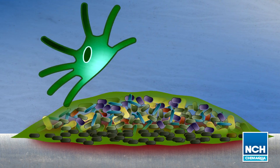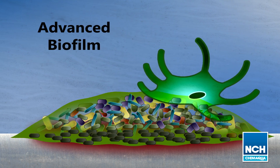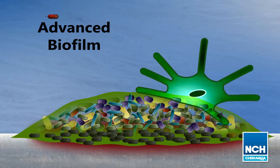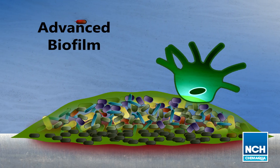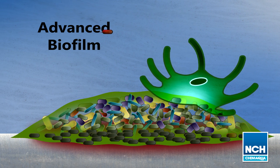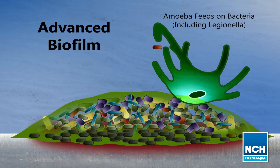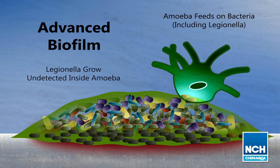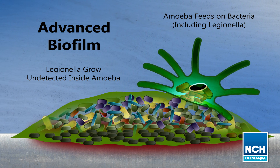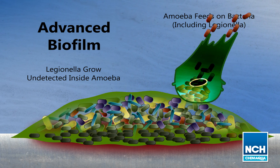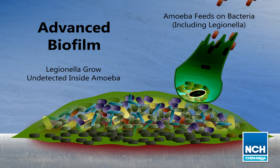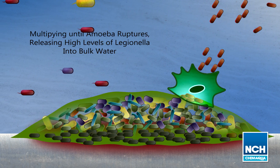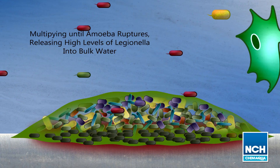In an advanced biofilm, higher life forms such as amoeba and protozoa ingest bacteria in the bulk water and biofilm. Some bacteria, such as Legionella, can multiply inside the higher life forms to the point of bursting the host organism. This can suddenly release high levels of Legionella into the bulk water.